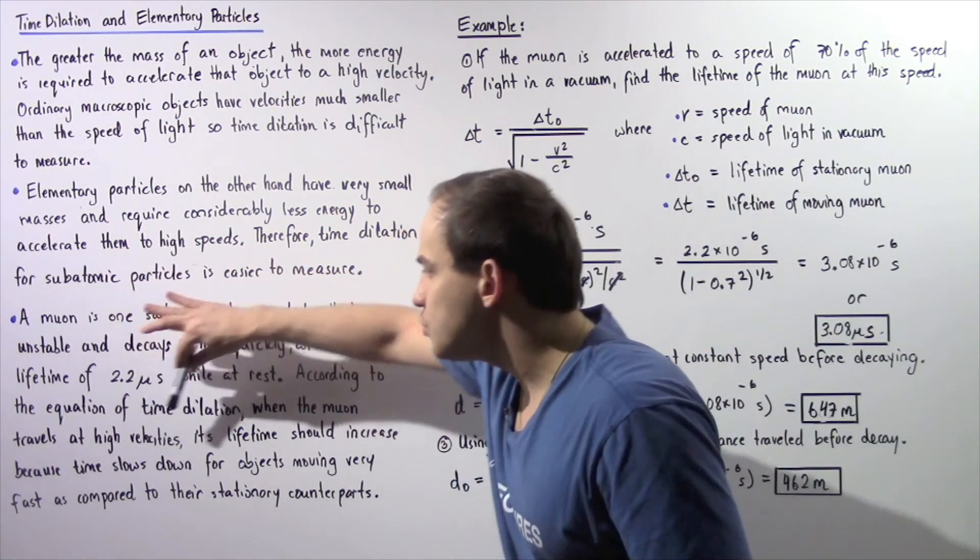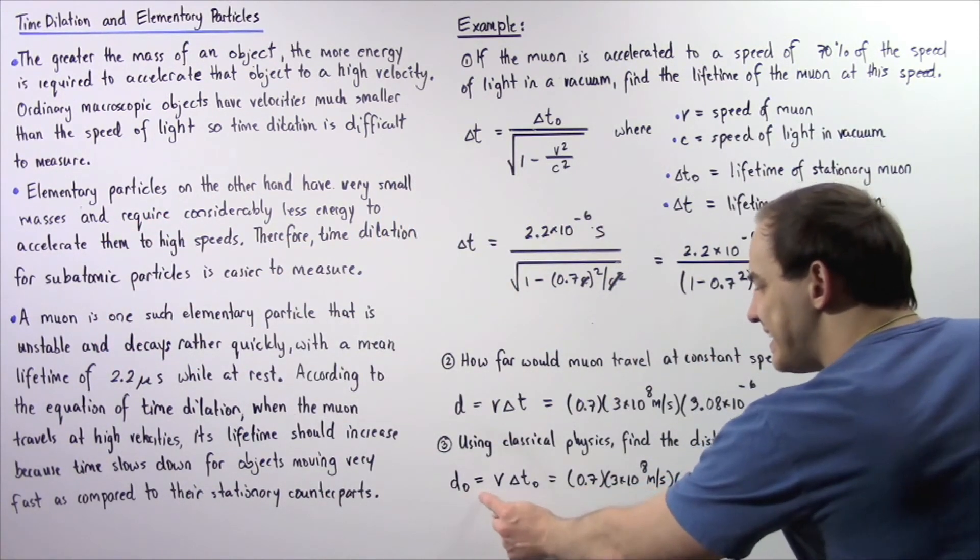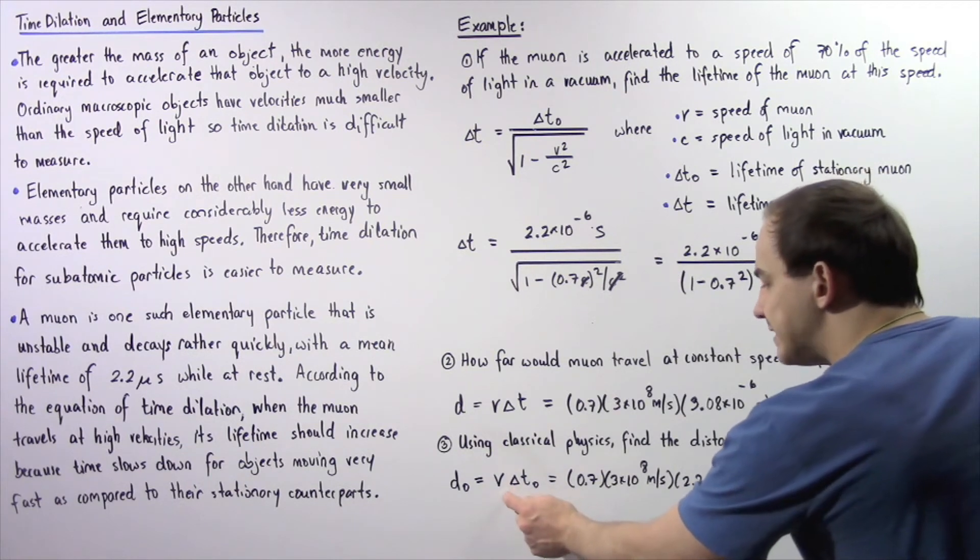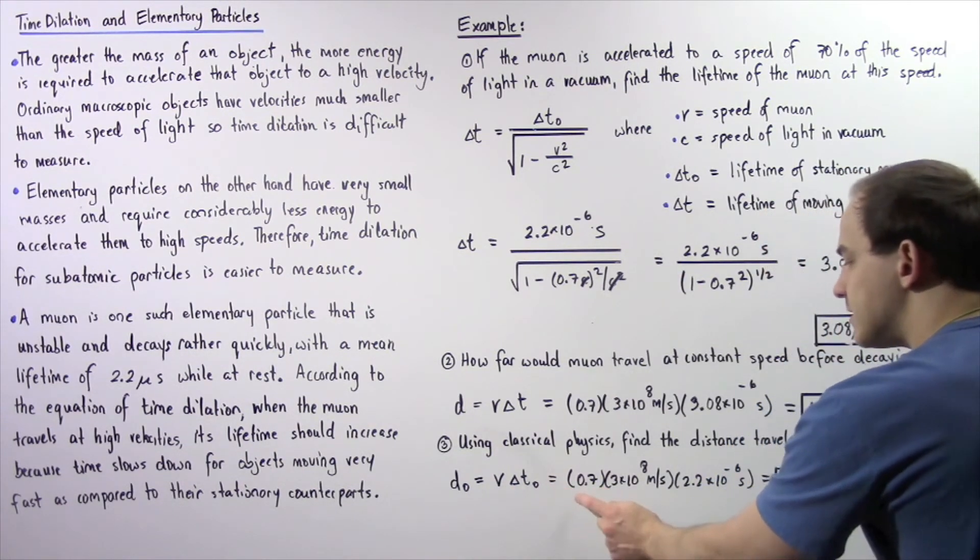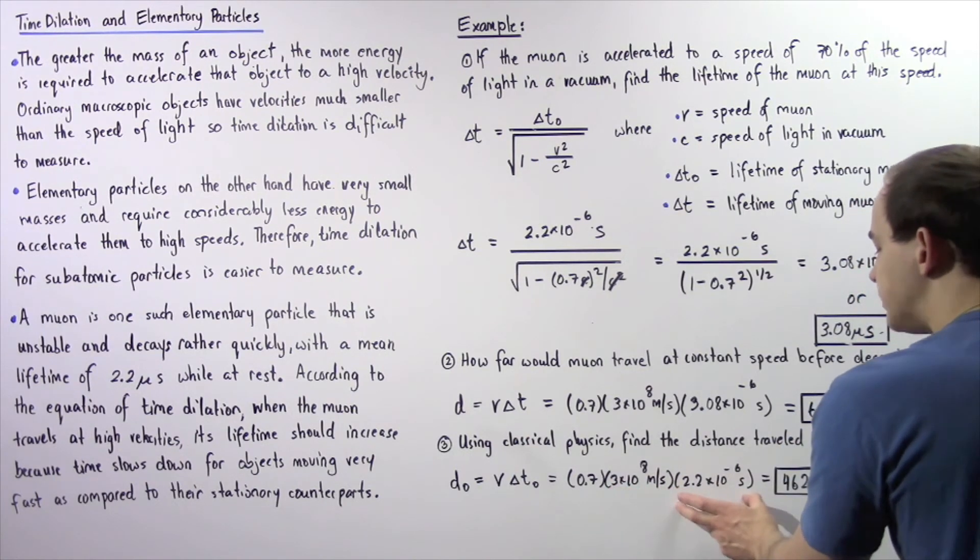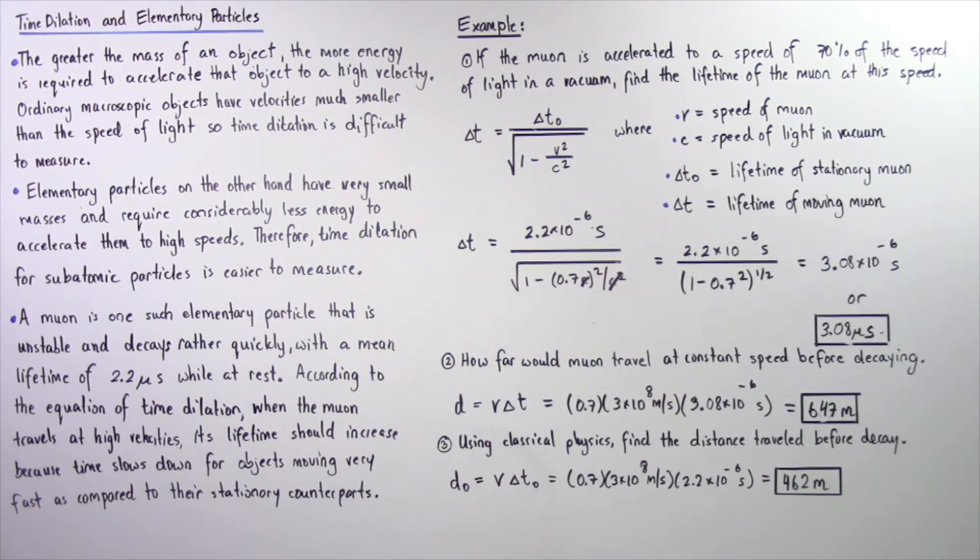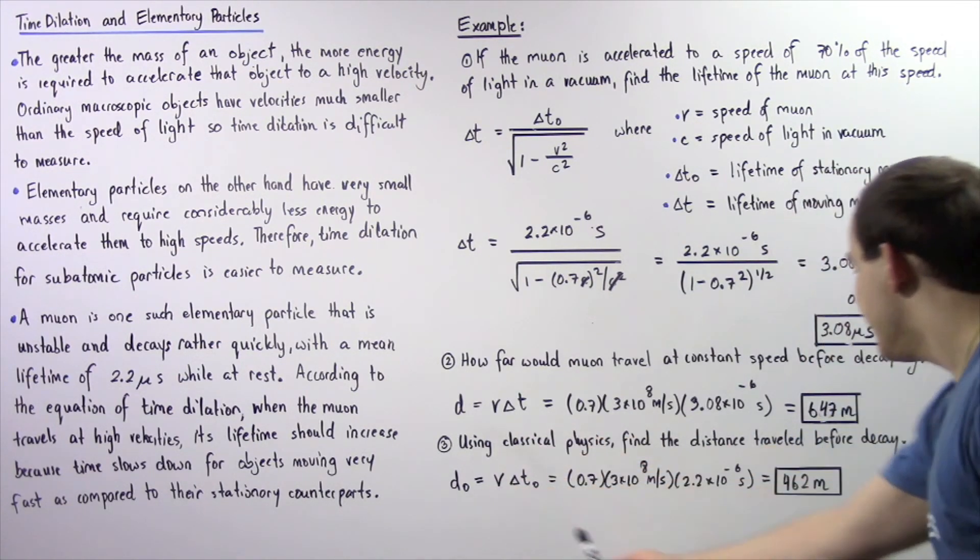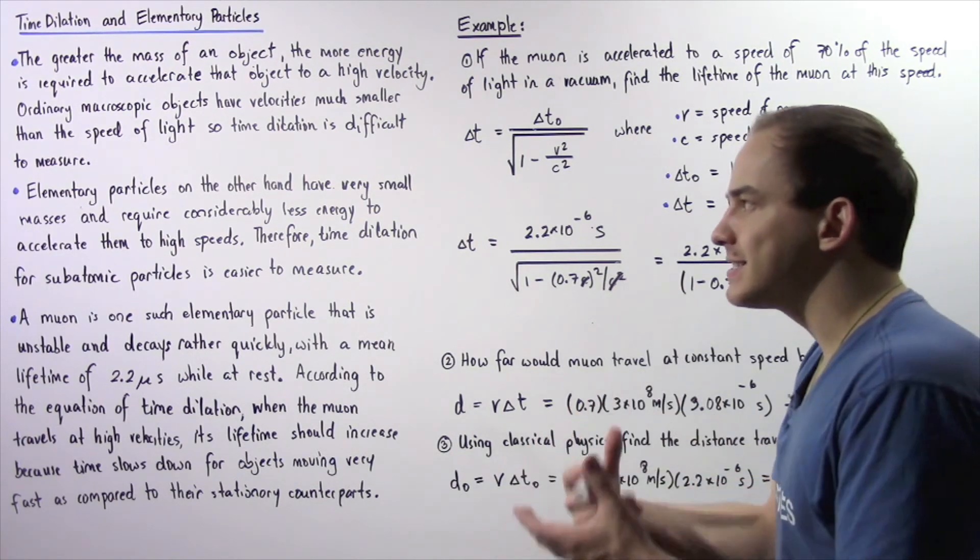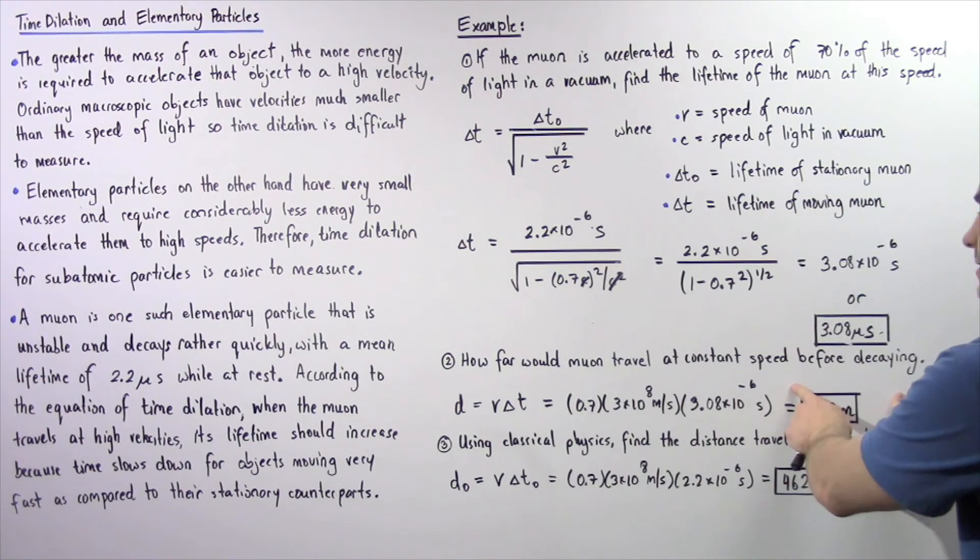So now we want to use this time interval. So d₀ is equal to v multiplied by delta t₀. That gives us 0.7 times the speed of light in a vacuum multiplied by this time quantity and that gives us 462 meters.